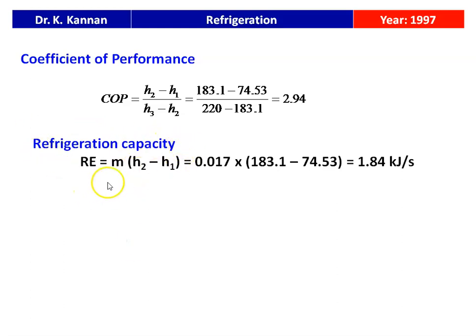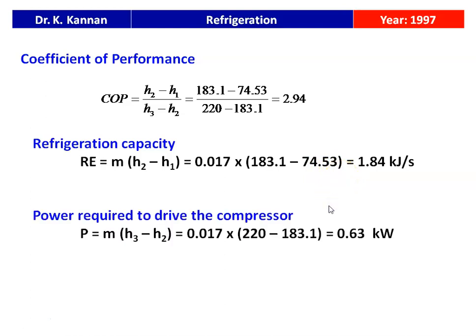Refrigeration capacity equals M multiplied by (H2 minus H1): 0.017 multiplied by (183.1 minus 74.53) equals 1.84 kJ/s. Power required to drive the compressor equals M multiplied by (H3 minus H2): 0.017 multiplied by (220 minus 183.1) equals 0.63 kilowatts. Summary: COP equals 2.94, refrigeration capacity equals 1.84 kJ/s, and compressor power equals 0.63 kW.